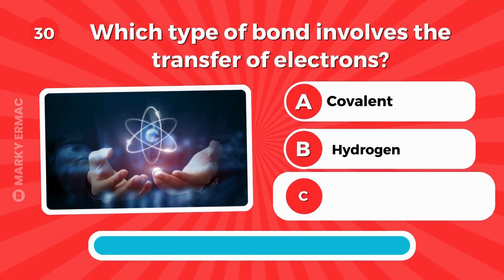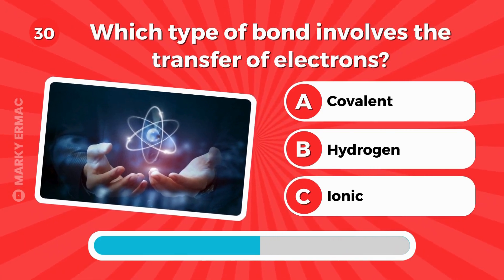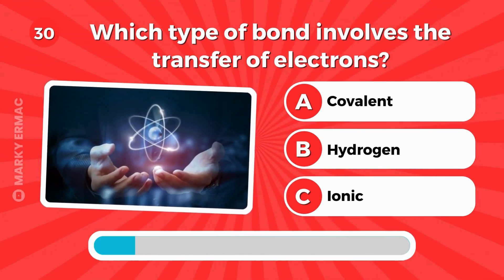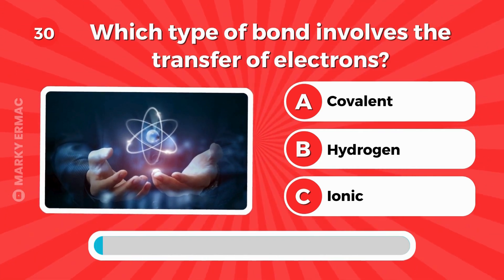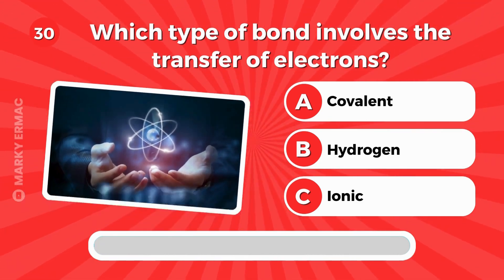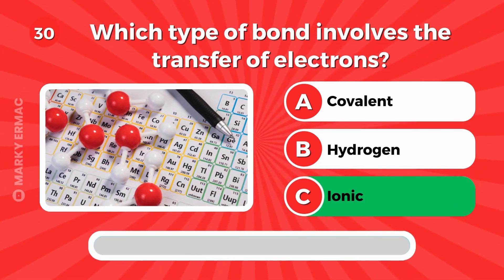Which type of bond involves the transfer of electrons? Covalent, hydrogen, or ionic? It's ionic.